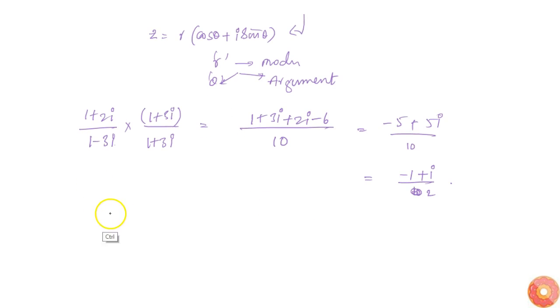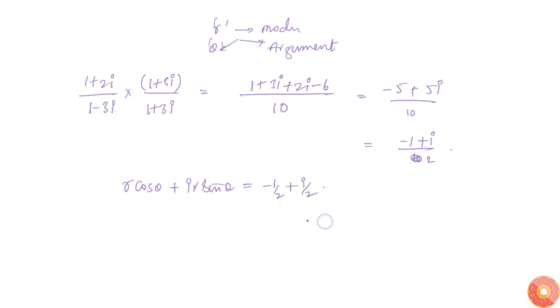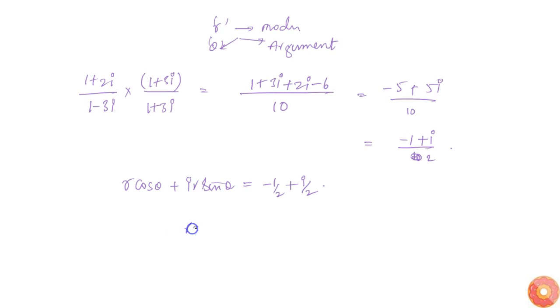Now this is equal to r cosθ plus i r sinθ. This is equal to -1/2 plus i/2. So from comparing we get r cosθ is equal to -1/2 and r sinθ is equal to 1/2.